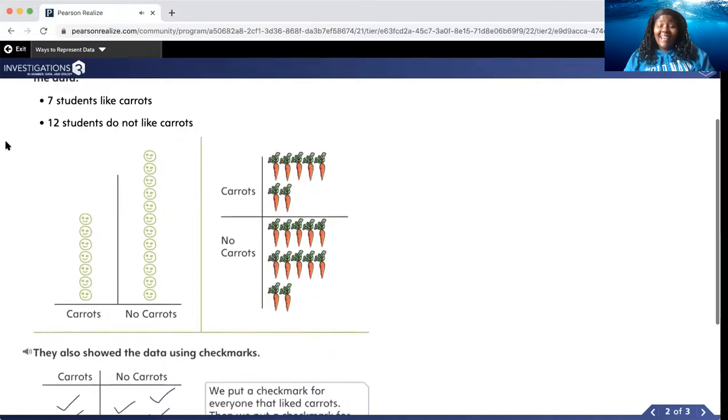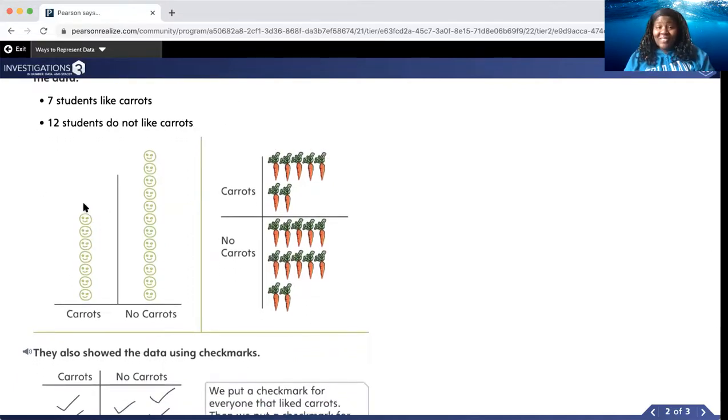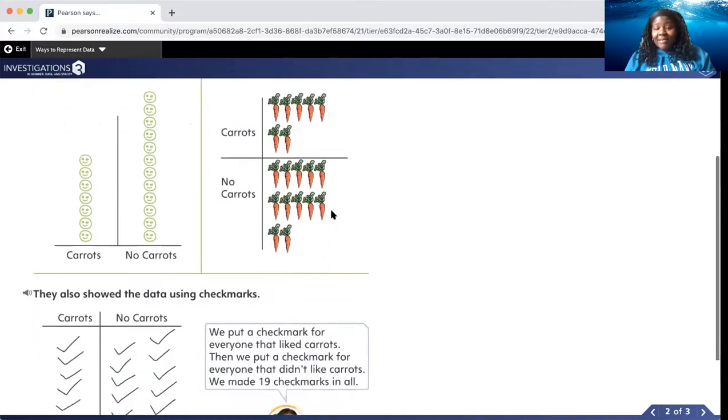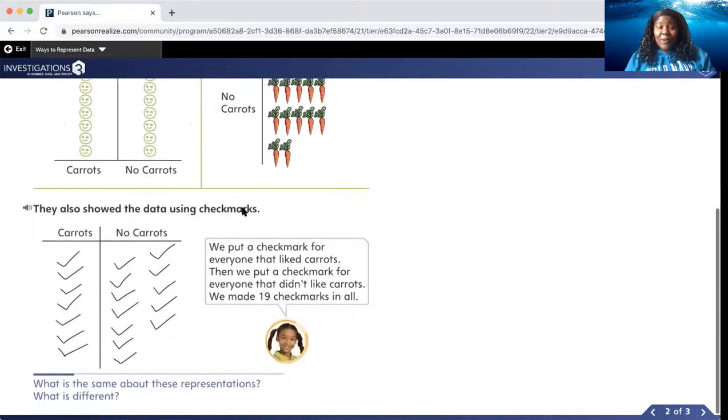So here they decided to represent their data here using smiling faces. Here they used an actual picture of carrots. Let's check out the other way that they represented their data. They also showed the data using check marks. We put a check mark for everyone that liked carrots. Then we put a check mark for everyone that didn't like carrots. We made nineteen check marks in all.